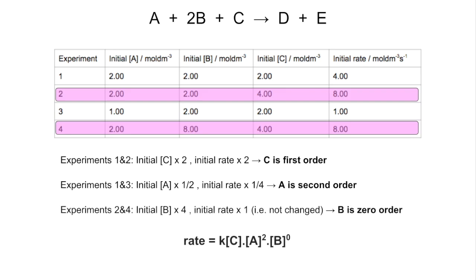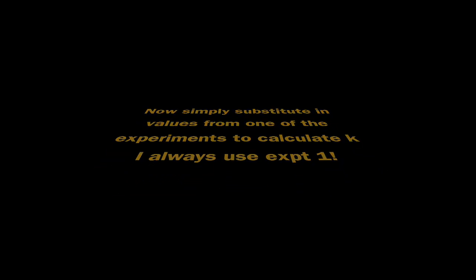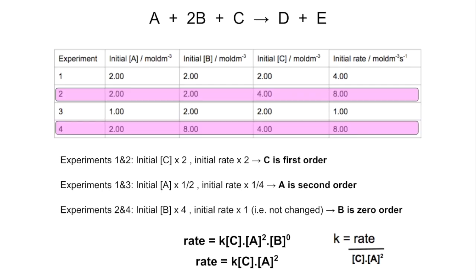Now we've got the orders, we can write the rate equation. We simplify it by dropping B, since B to the power of 0 is just 1. Then you'd normally rearrange for k, so k in this case equals rate over the concentration of C times the concentration of A squared. Even if they don't ask for units, you should work them out — in this case they come out as dm⁶ mol⁻² s⁻¹.